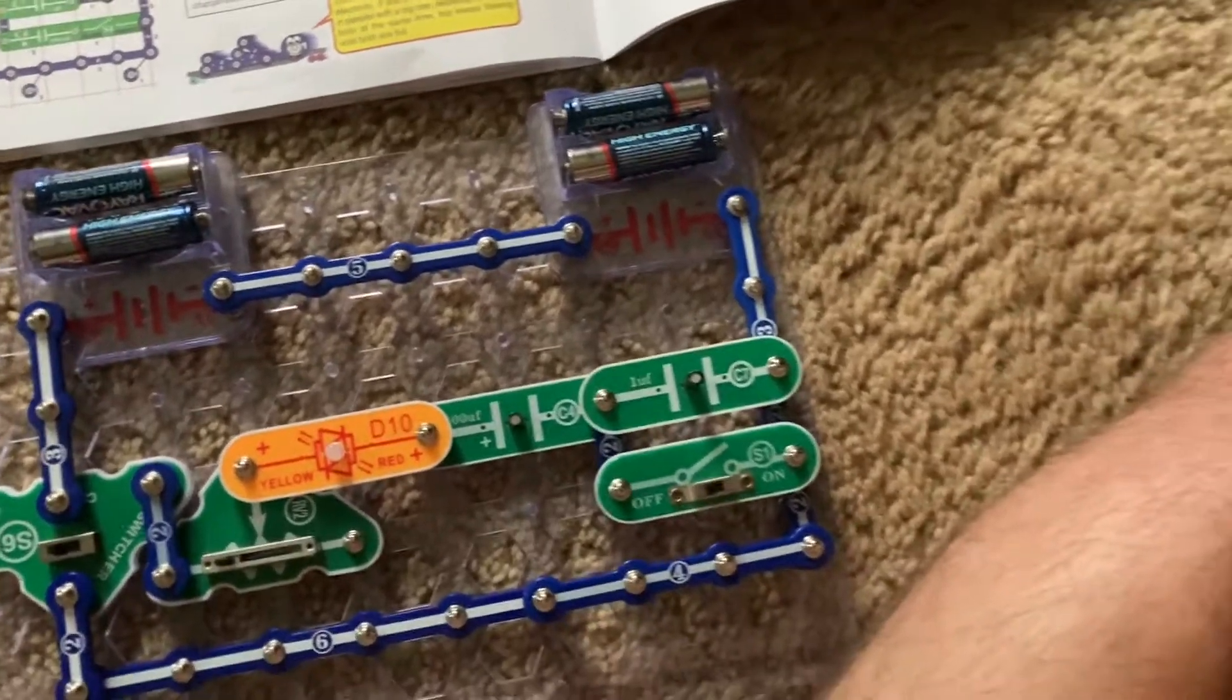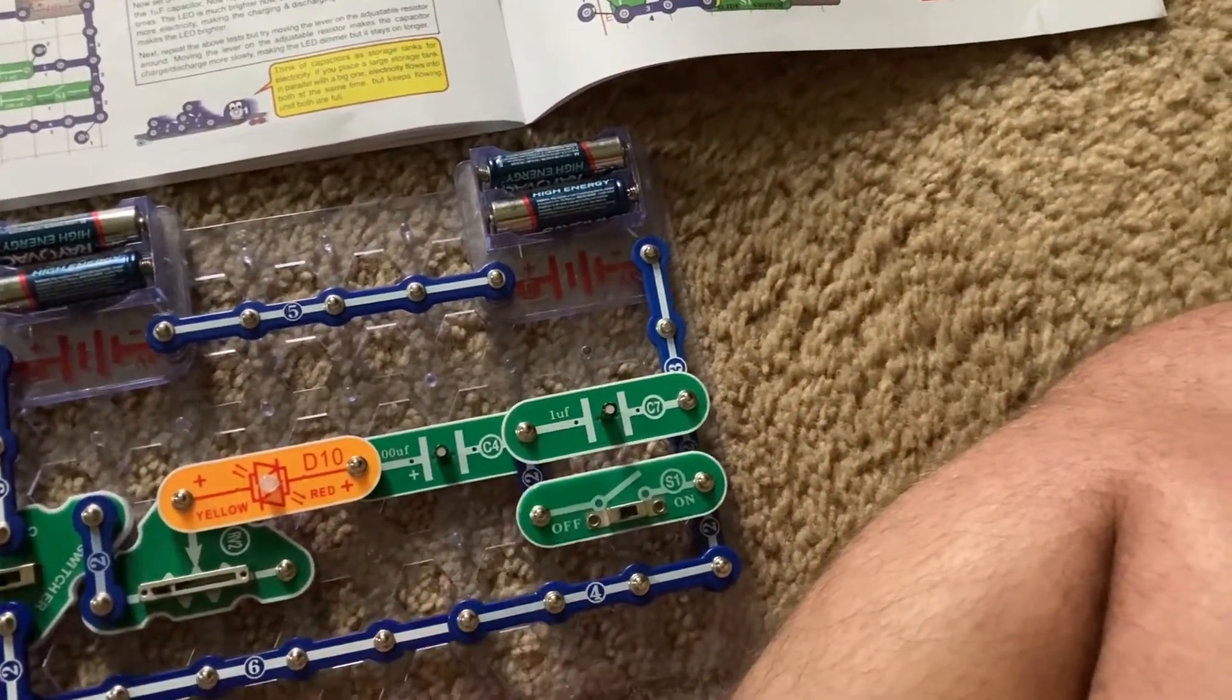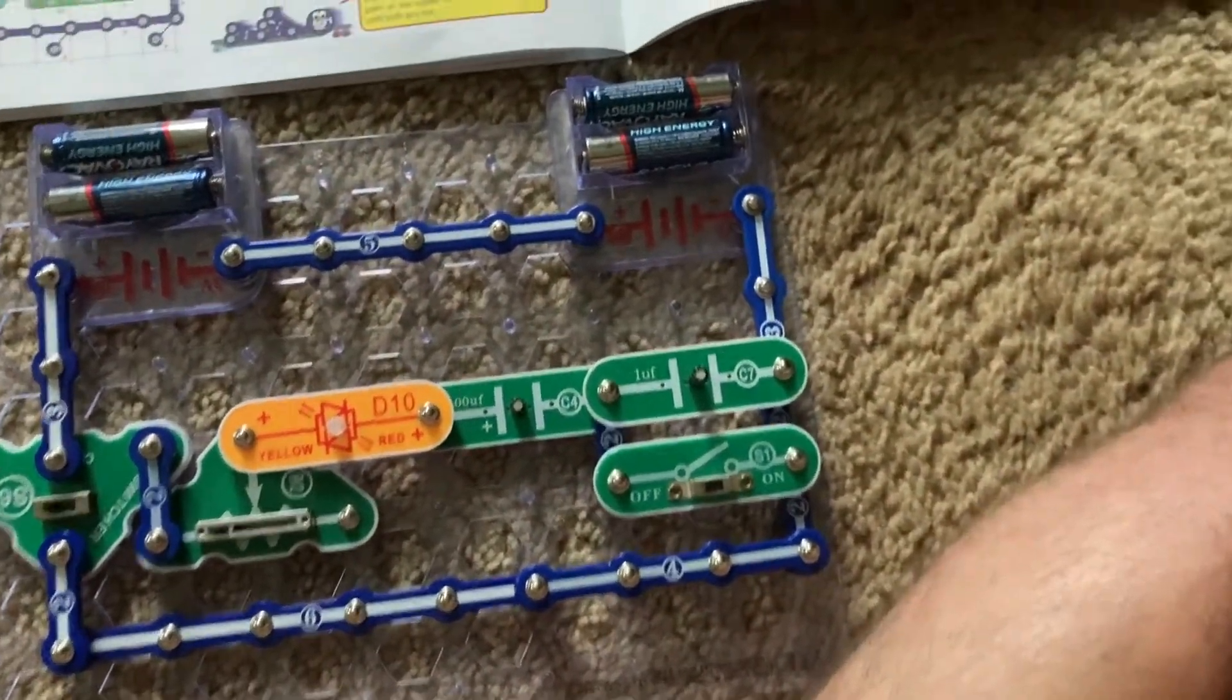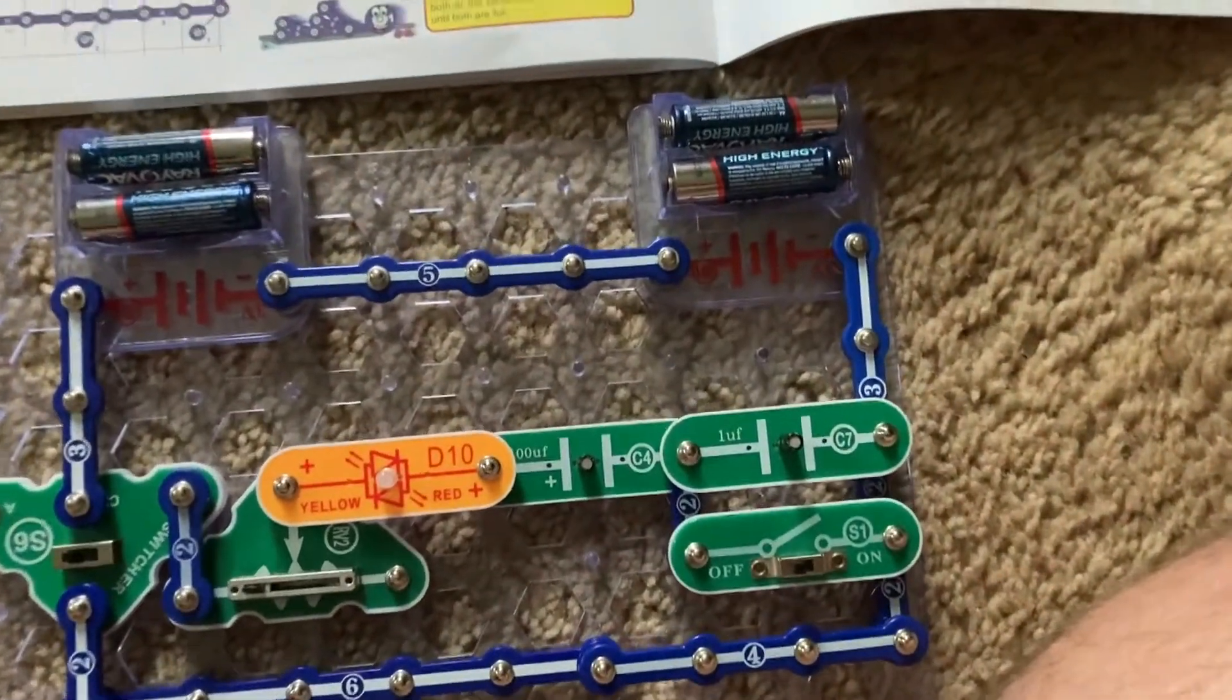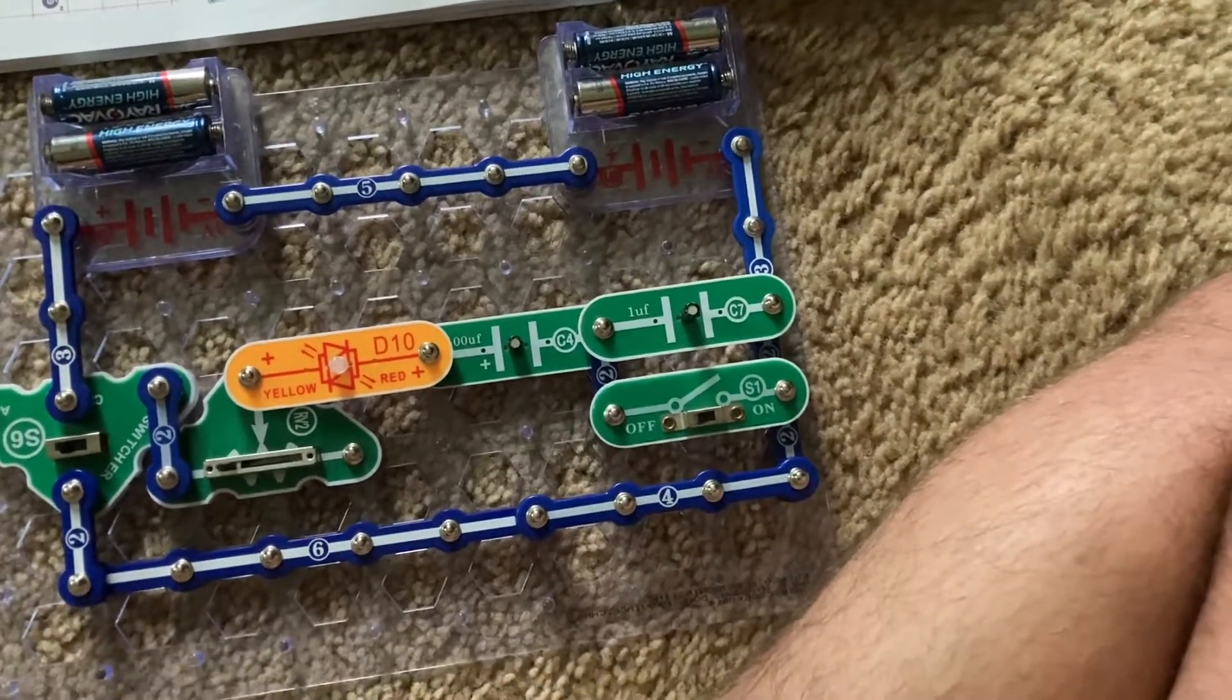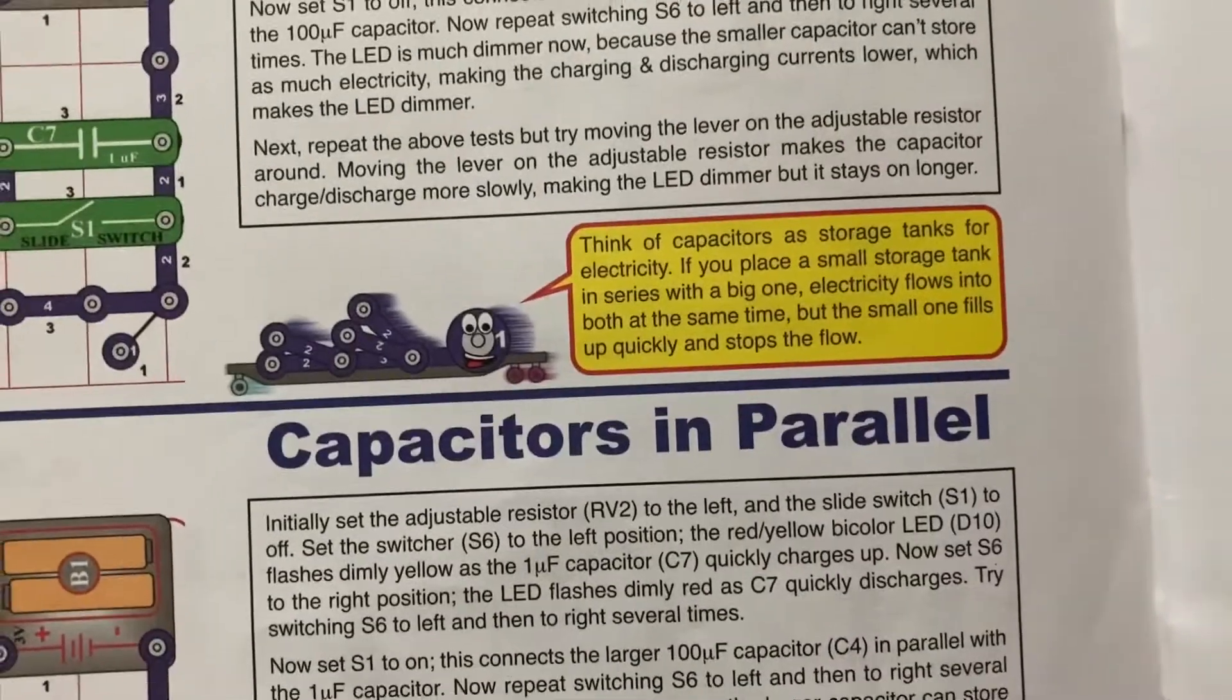Now the C4 and C7 capacitors are in series when the slide switch is off and the smaller capacitor will naturally receive more power. As if you had a small storage tank for electricity in series with a big tank, electricity will fill both of them at the same time, but the small one will fill up more quickly and stop the flow. That's what Snappy says.